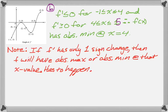So let me just jot this down for you. If f prime has only one sign change, then f will have its absolute maximum or absolute minimum at that x value. It just has to happen.